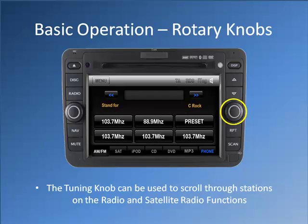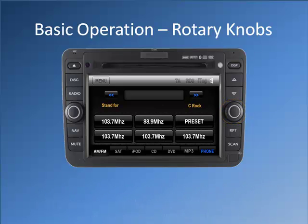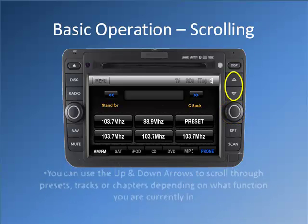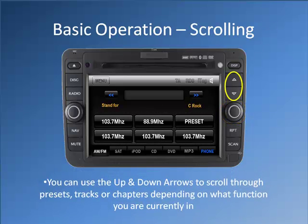The tuning knob can be used to scroll through stations on the radio and satellite radio functions. You can use the up and down arrows to scroll through presets, tracks, or chapters depending on what function you are currently in.